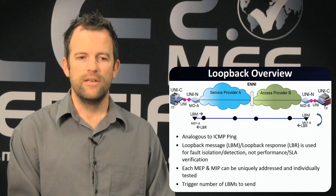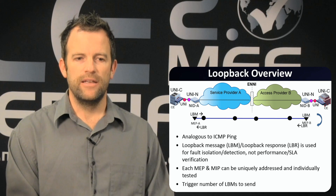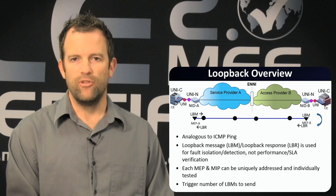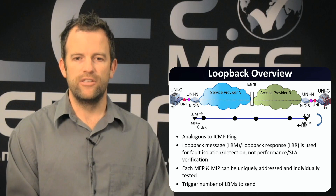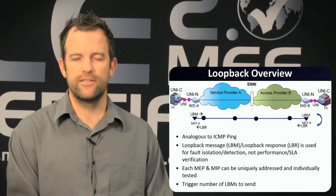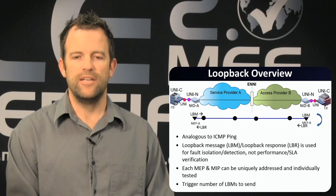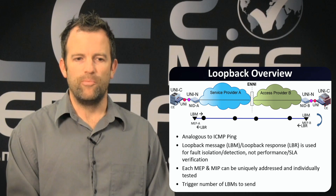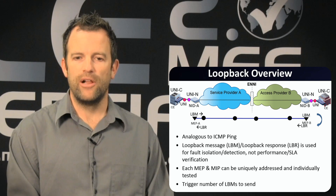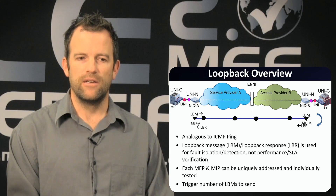Showing the same use case, loop back requests are sent from NID A, and the operator configures a number of loop back messages to be sent to a destination — in this case, the UNI on the access provider side labeled as NID B. When a loop back request is received at NID B, the loop back reply is sent back to the originating NID A.